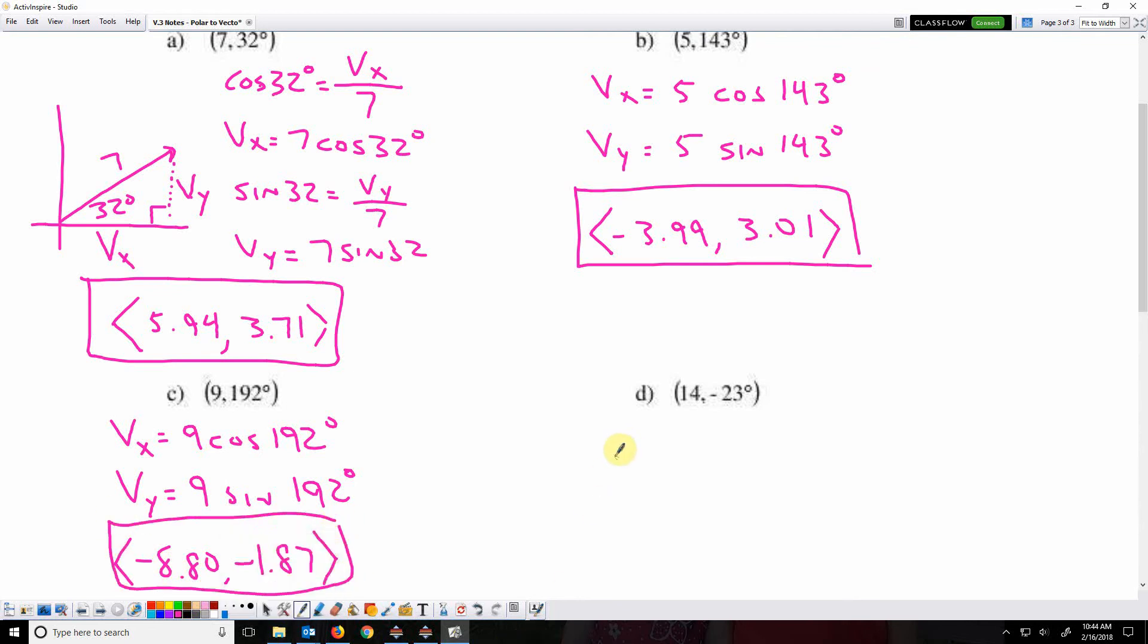And for d, the x component is 14 cosine negative 23, and the y component is 14 sine negative 23.